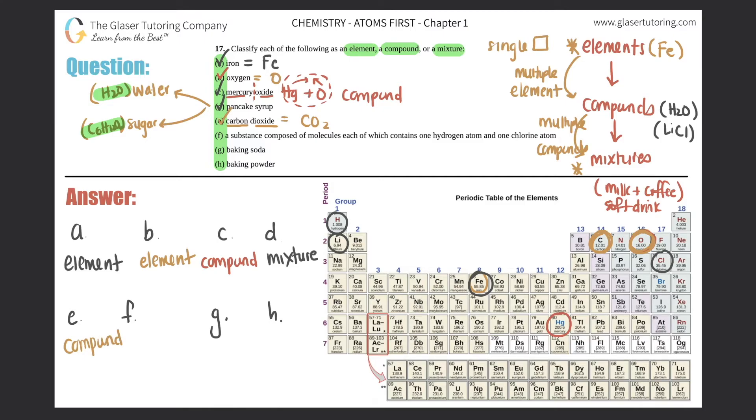Letter F: A substance composed of molecules, each of which contains one hydrogen atom and one chlorine atom. It looks like we're taking hydrogen and combining it with Cl. Hydrogen is an element, and so is chlorine. Two different elements are coming together - they're going to form a compound. The actual compound is HCl. Two different elements - that is a compound.